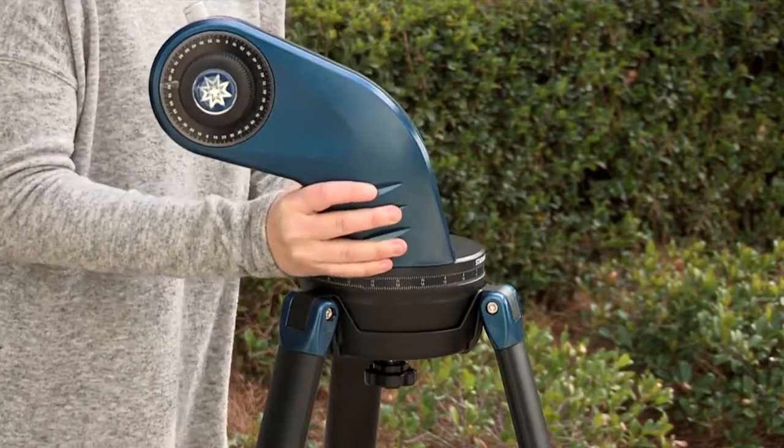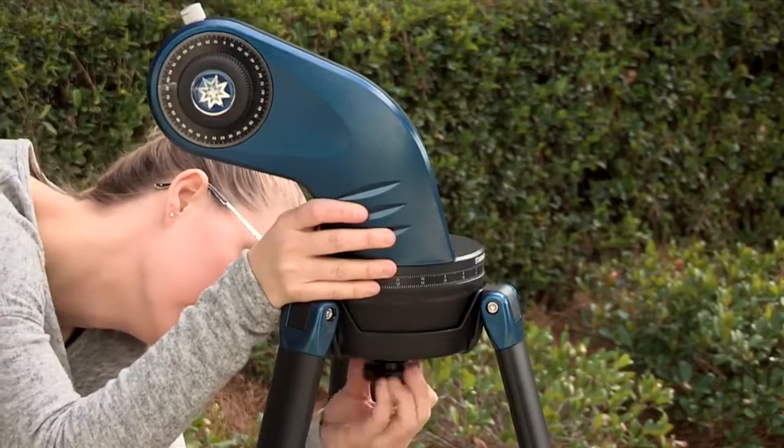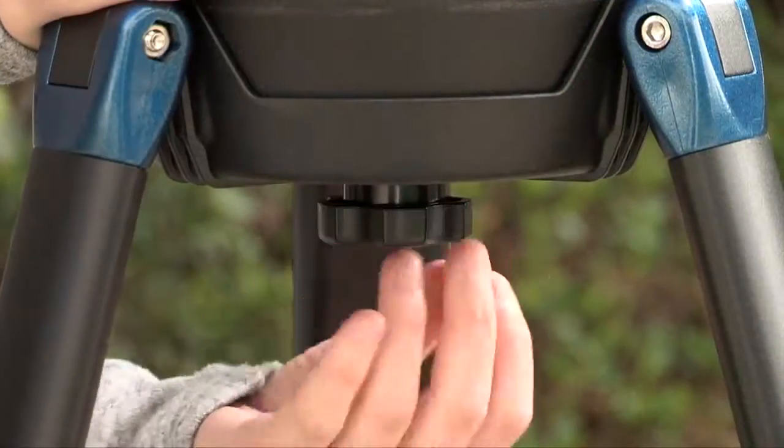Next, place the mounting arm assembly into the tripod base. Reach underneath and thread the mounting knob through the tripod base and into the mounting arm assembly. Tighten to a firm feel. Do not over tighten.